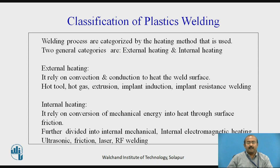The second category is internal heating. It relies on conversion of mechanical energy into heat through surface friction — that means there is no direct application of heat energy by convection or conduction. Further, it is divided into internal mechanical, internal electromagnetic heating, ultrasonic, friction, laser welding, and so on. There are such subtypes for the internal heating welding processes for plastics.